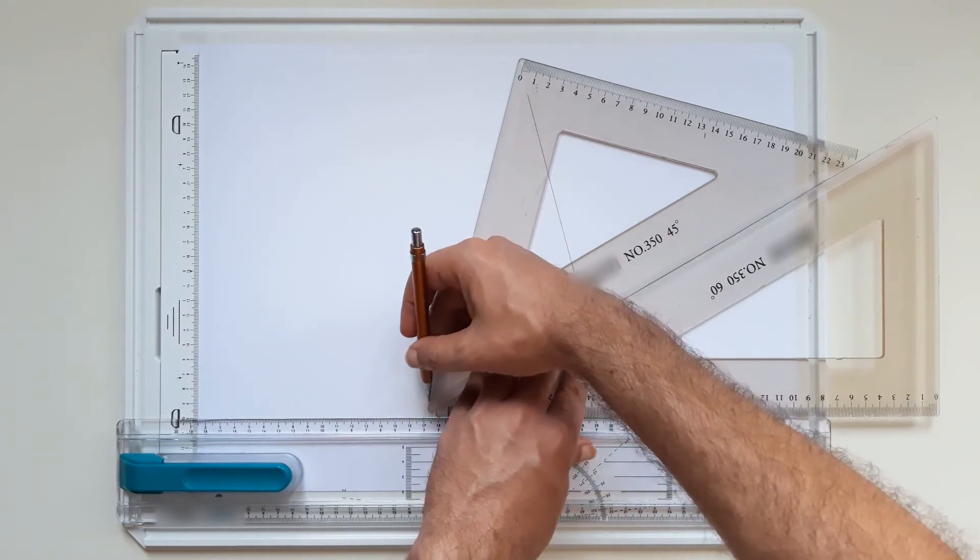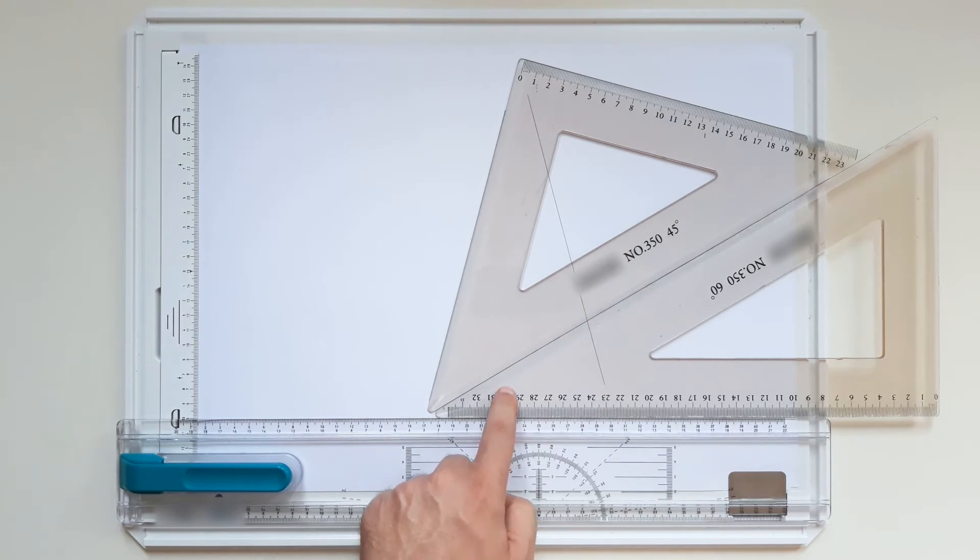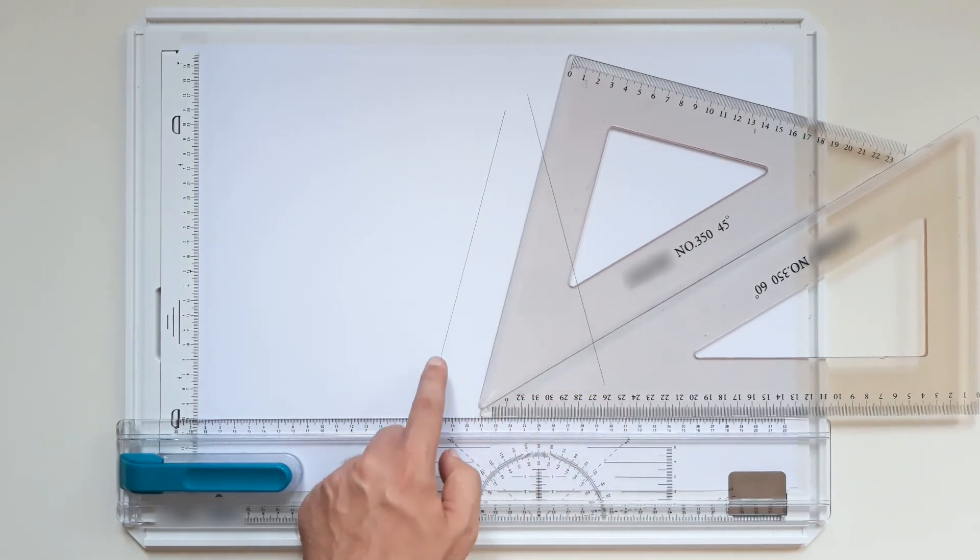And if we draw this line, since those angles are 30 degrees and 45 degrees again, we have another 75 degree angle over here.